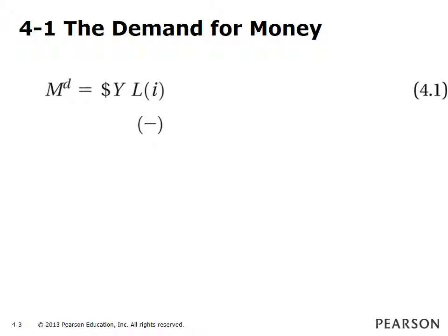Families must decide how to allocate their financial wealth — say $100,000 from past savings, which is given at a point in time — between money and bonds. Money, which includes currency, coins and notes, and checkable deposits, pays no interest. Money is needed for transactions.